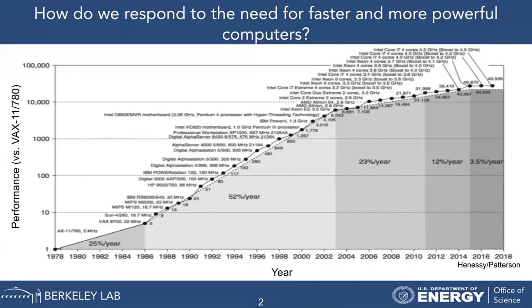I'm showing you here a plot where the y-axis shows computing performance and the x-axis shows the year. You can see that around 2003, the growth in computing performance kind of stopped being what we expected. This happened because we basically reached the fundamental physical limits of our current technologies.